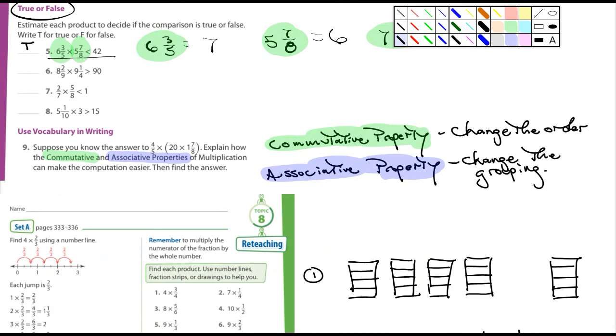All right, let's see here. Vocabulary, suppose that, I'm reading number nine here. The answer to four-fifths times, and then in parentheses, 20 times one and seven-eighths. You know the answer. Explain how commutative property and associative properties of multiplication can make the computation easier, then find the answer. I'll let you guys actually find the answer, but I did want to point out, I don't know if any of you actually memorize this. The commutative property, we've talked about that early on in the book. You can change the order and it's not going to change the answer. And associative property has to do with grouping. You can change the grouping and it doesn't matter. All right, so I will let you guys find the actual answer to that.